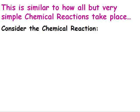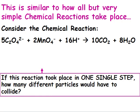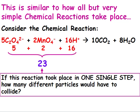Look at this chemical reaction. If this reaction took place in one single step, how many different particles would have to collide? The reactants include 5 of these, 2 of these, and 16 of these, which gives a total of 23 particles.